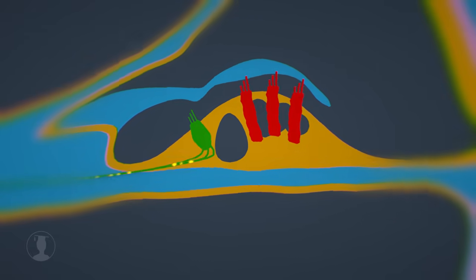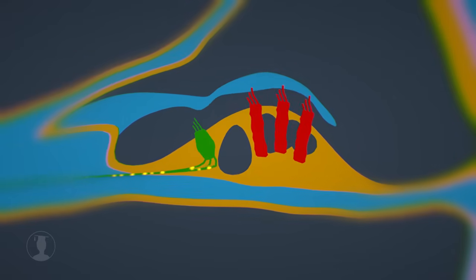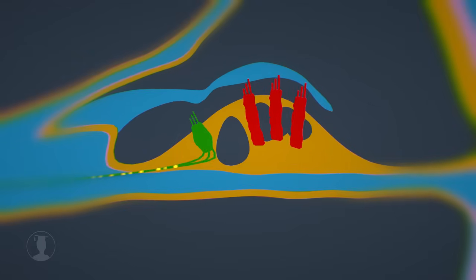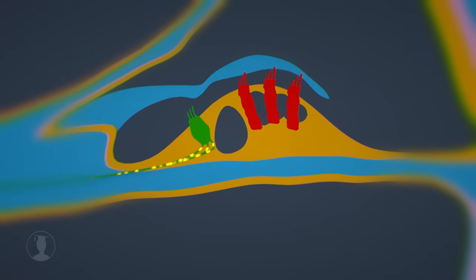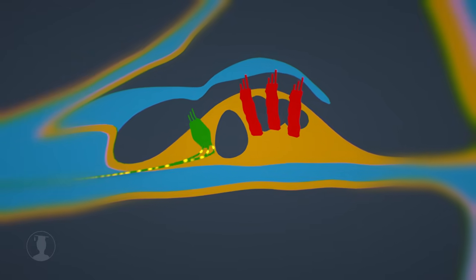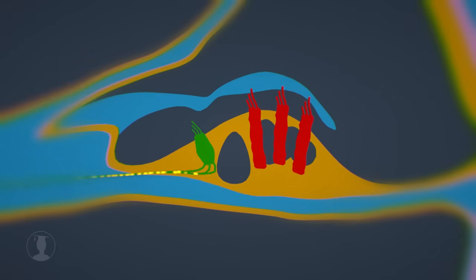As the outer hair cells are attached to the tectorial membrane, they also move. If the hairs of the outer hair cells are bent to the left, the hair cells lengthen. When bent to the right, the hair cells shorten.